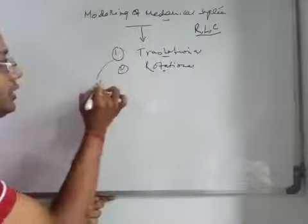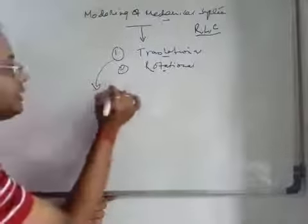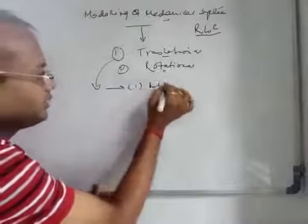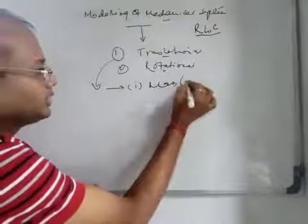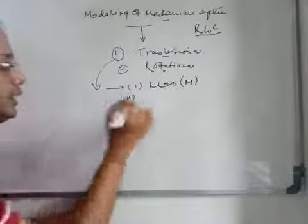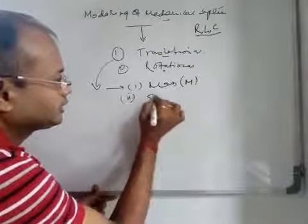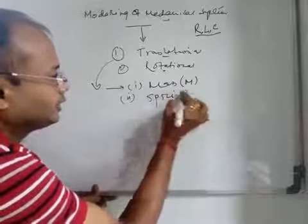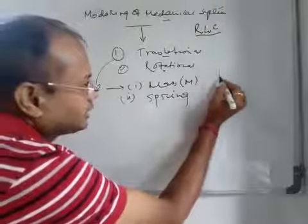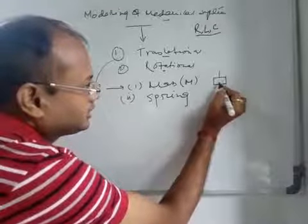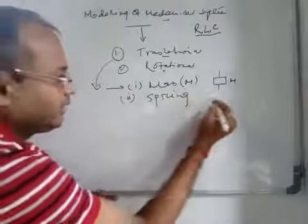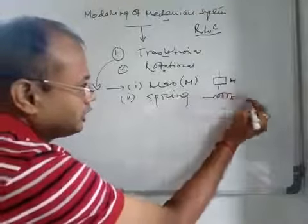For translational motion, the basic elements or qualities required are: number one, inertial mass, which is denoted by M. Number two, spring. The mass is denoted like this, and this is the spring — all of you know the spring.